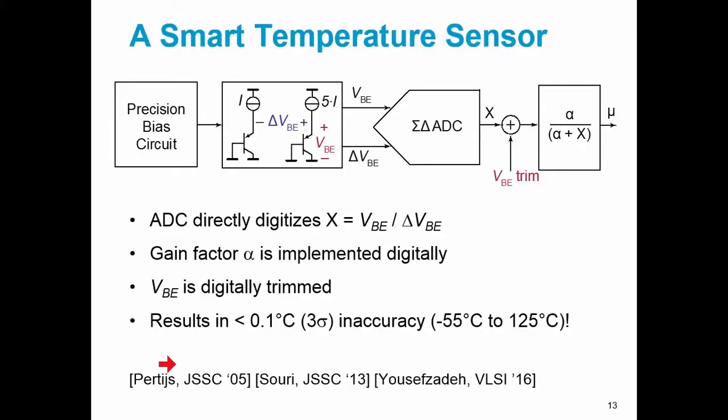So this leads us to the architecture of a smart temperature sensor. It consists of a bias circuit, and the bias circuit provides a current to bias these two BJTs. The BJTs are biased at a 1 to 5 ratio, and they generate these two voltages, VBE and delta VBE. We're going to digitize these signals directly by applying these signals directly to a sigma delta ADC, which will generate a ratio X, which is VBE divided by delta VBE. Doing things this way means that the gain factor alpha can actually be implemented digitally. And also VBE can be trimmed in the digital domain.